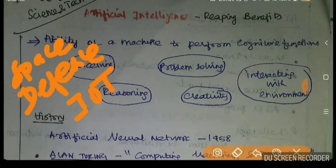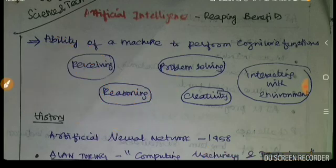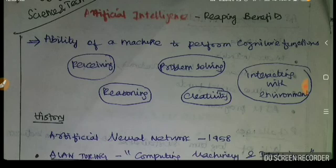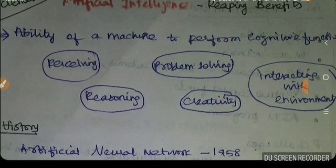The definition of Artificial Intelligence, IoT (Internet of Things), and RFID are important to know. Artificial Intelligence is the ability of a machine to perform cognitive functions — functions that human beings normally perform — such as receiving information and problem solving.